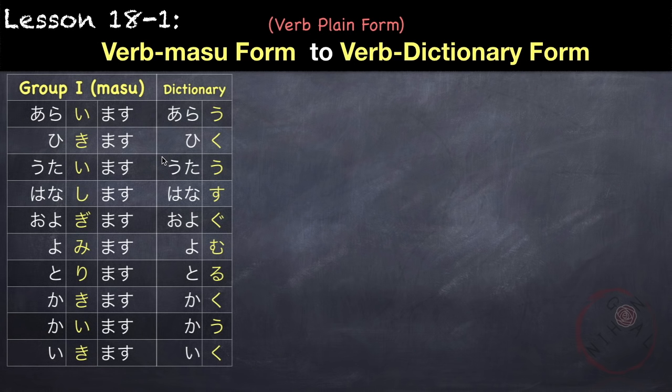Hikimasu becomes hiku. Utaimasu becomes utau. Hanashimasu becomes hanasu. Oyogimasu becomes oyogu. Yomimasu becomes yomu. Torimasu becomes toru. Kakimasu becomes kaku. Kaimasu becomes kau. Ikimasu becomes iku.